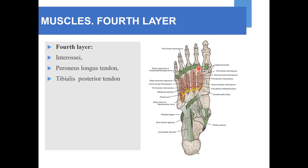Now the fourth layer — you can see the interossei: there are plantar interossei and dorsal interossei. Then there is the peroneus longus tendon, coming from the lateral compartment of the leg and entering the fourth layer of the sole. There is also the tibialis posterior tendon, attached to the tuberosity of the navicular bone, and the medial, lateral cuneiforms, and some metatarsals. Both the tibialis posterior from the posterior compartment and the peroneus longus from the lateral compartment enter the fourth layer, along with the interossei muscles.